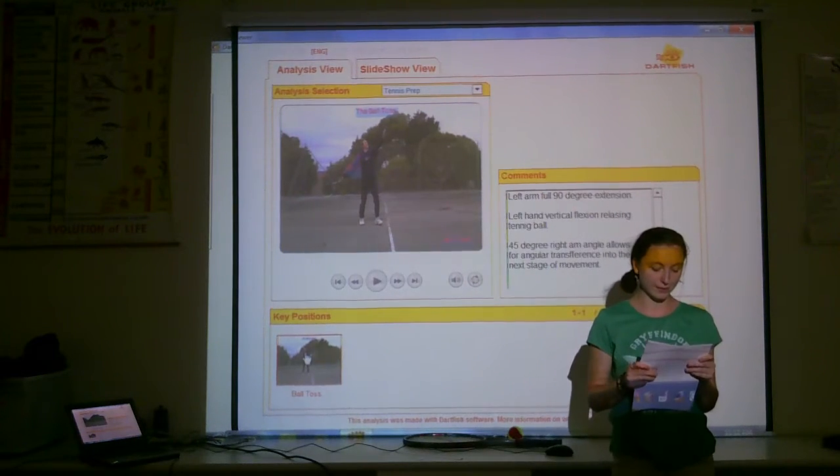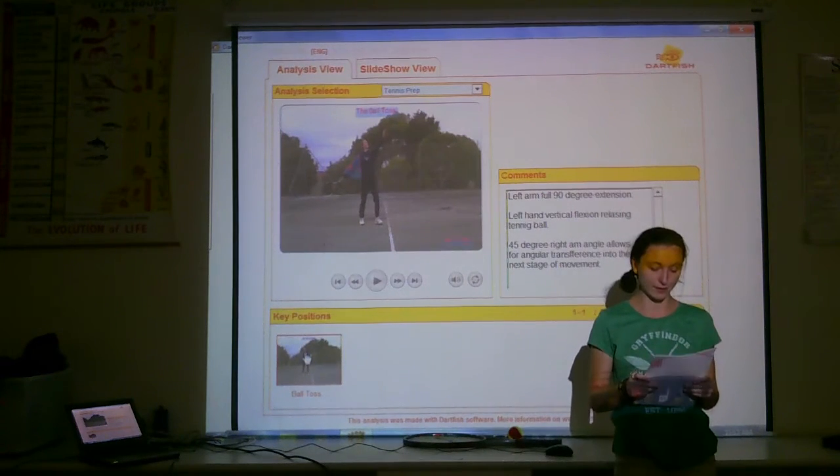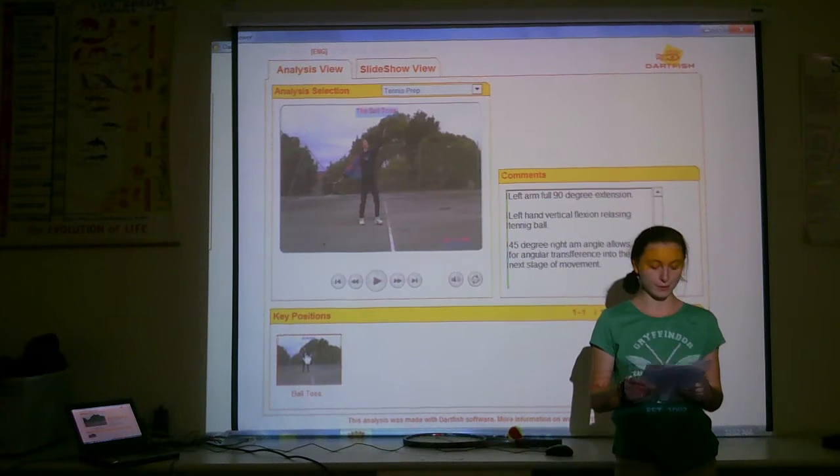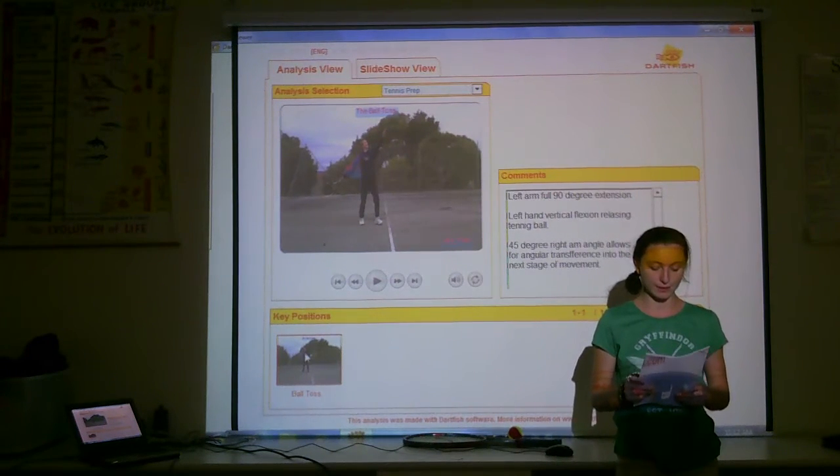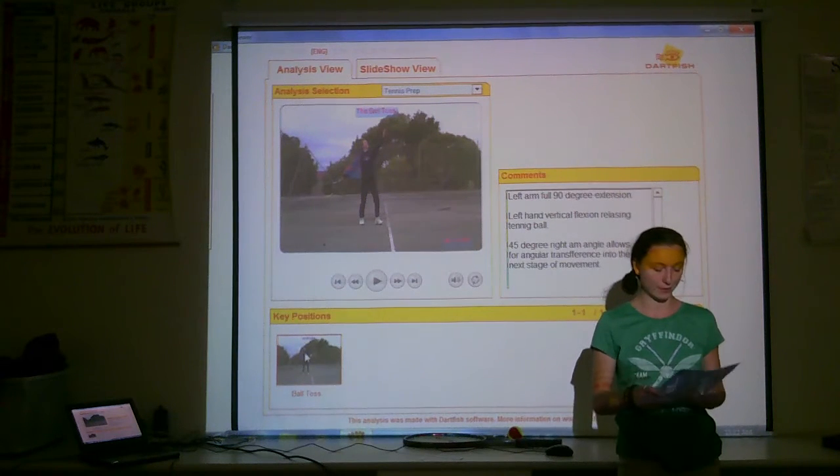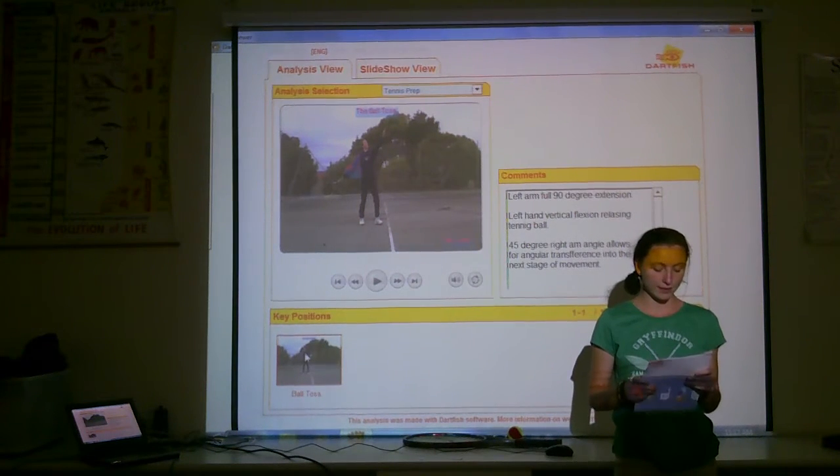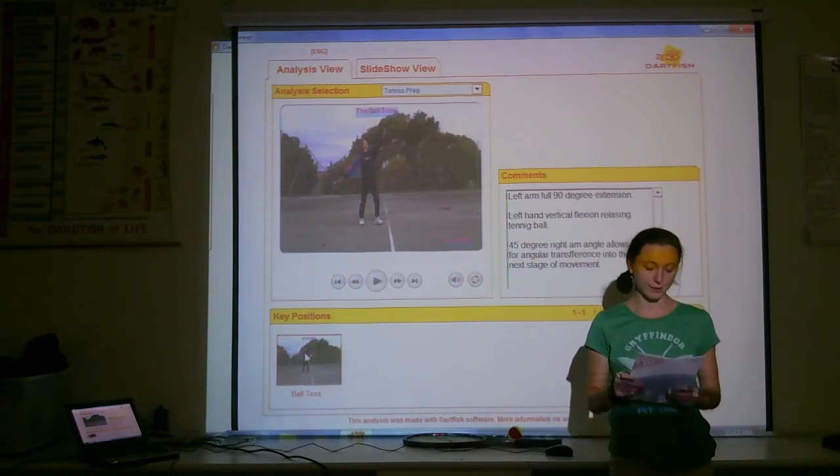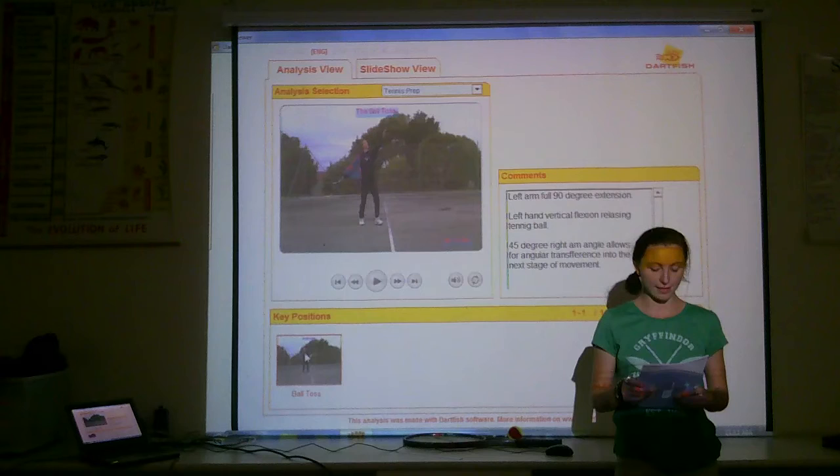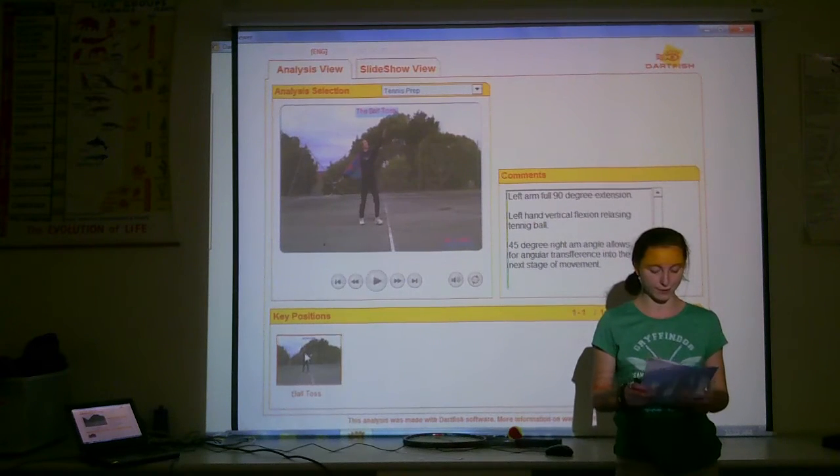However, the ball is released just off to the left of my left shoulder. This allows for a medial transverse rotation, which creates speed and spin on the ball. If the ball was released straight above my head, this could not happen. As the ball reaches the maximum projection height, there will be a point of no acceleration or deceleration. This is the desired time to hit the tennis ball via the follow-through.